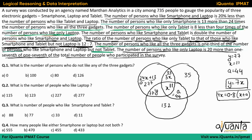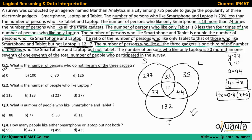Now let us solve the questions. The first question: what is the number of persons who do not like any of the three gadgets? These people lie outside the Venn diagram. Total is 735, so we subtract all region values: 735 − (277 + 33 + 35 + 77 + 11 + 44 + 132) = 126. So option D is the correct answer.